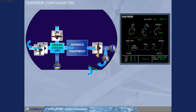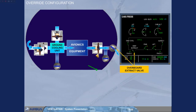In some failure cases, the override configuration is activated. In these cases, the overboard extract valve is partially open. The underfloor extract valve is closed. On the ECAM, the valve indication changes to an intermediate position.